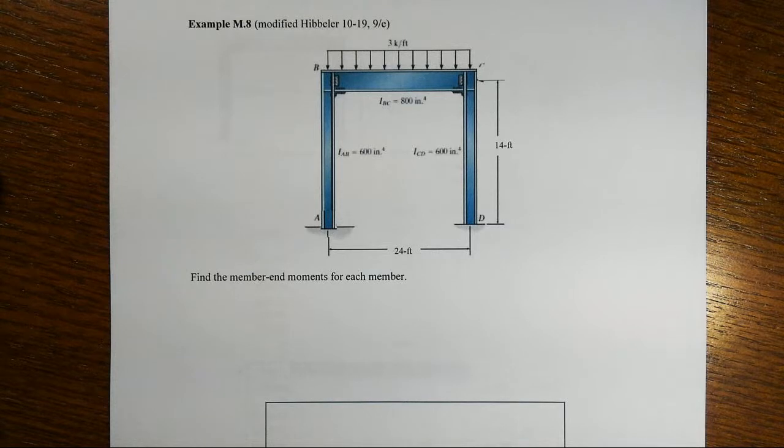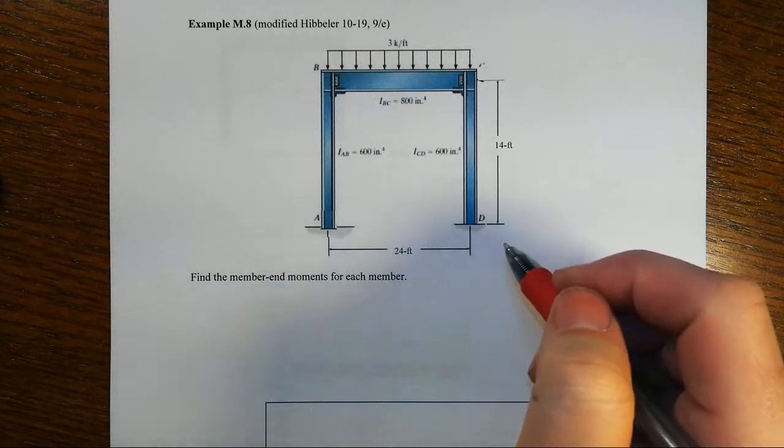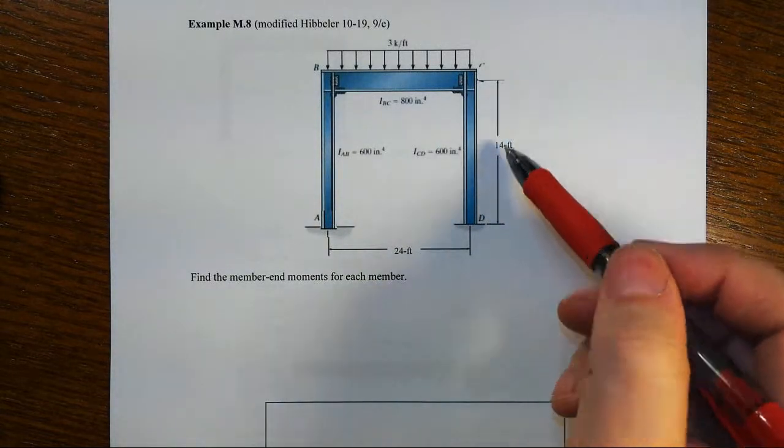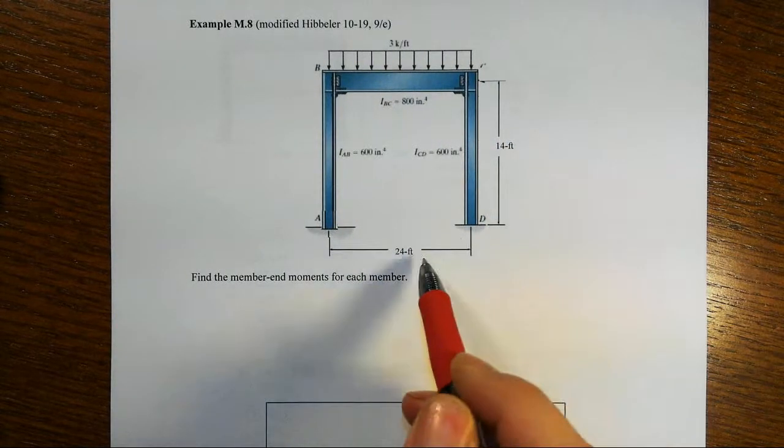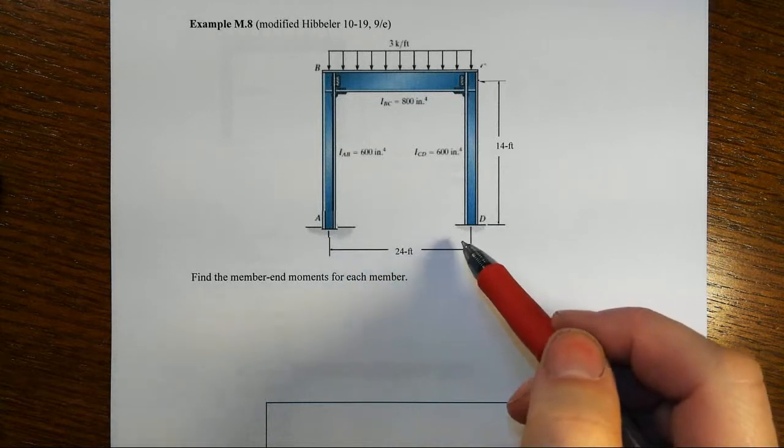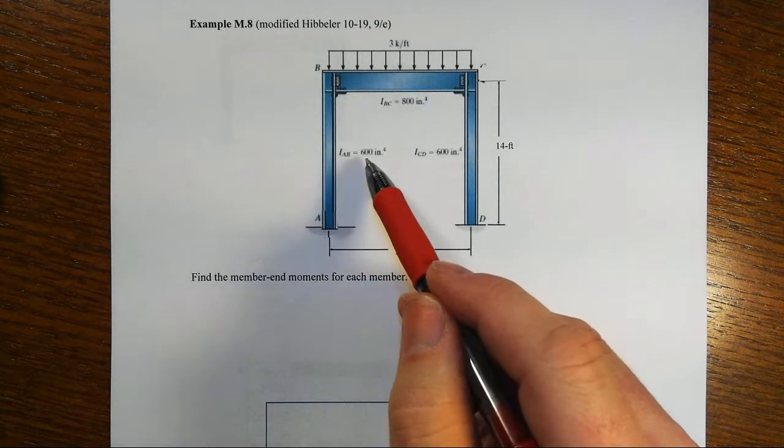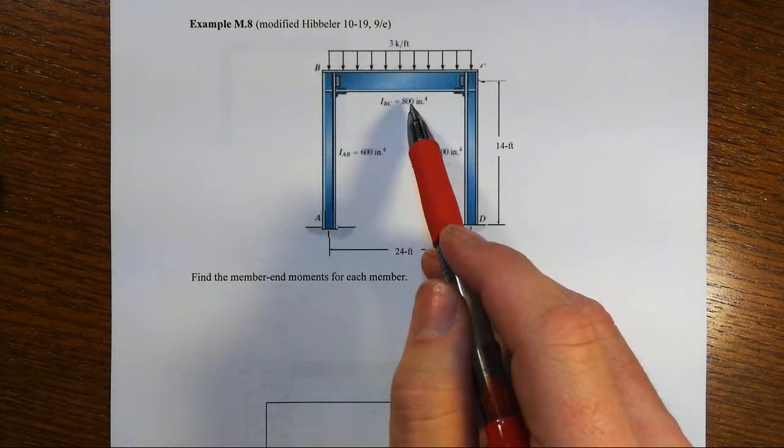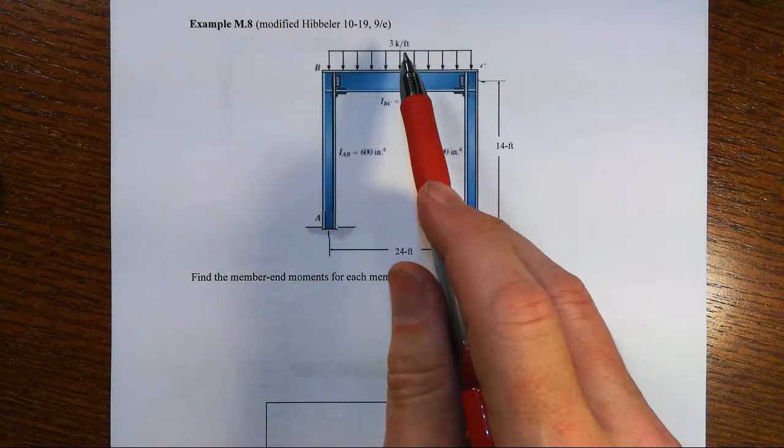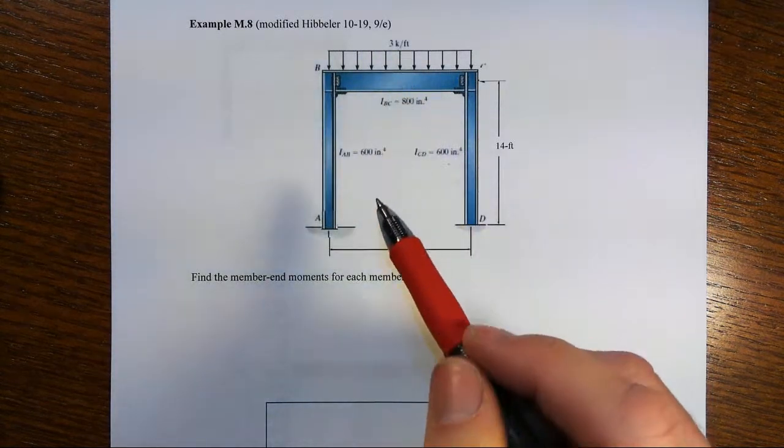In this frame example we're going to apply the moment distribution method to figure out what the member end moments for each member will be. Before we start, we're going to get an approximate answer. We have a 14 foot high story height, 24 foot bay width. The two columns are identical at 600 inches to the fourth, the beam is at 800 inches to the fourth, and we're supporting three kips per foot.